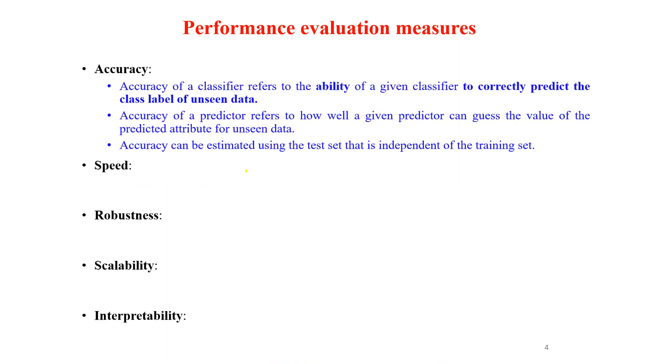Accuracy of a classifier refers to the ability of a given classifier to correctly predict the class label of unseen data. Accuracy of a predictor refers to how well a given predictor can guess the value of the predicted attribute for unseen data. Accuracy can be estimated using the test set that is independent of the training set.